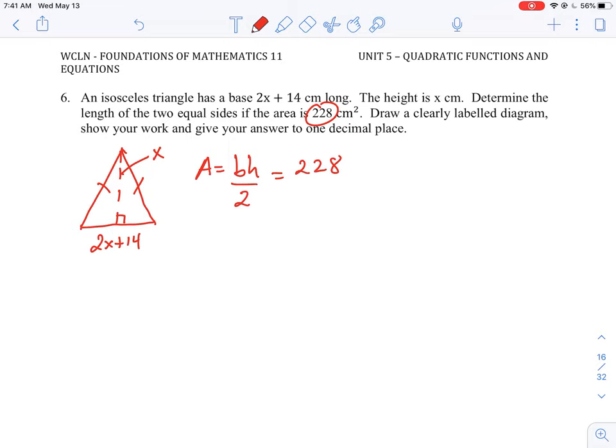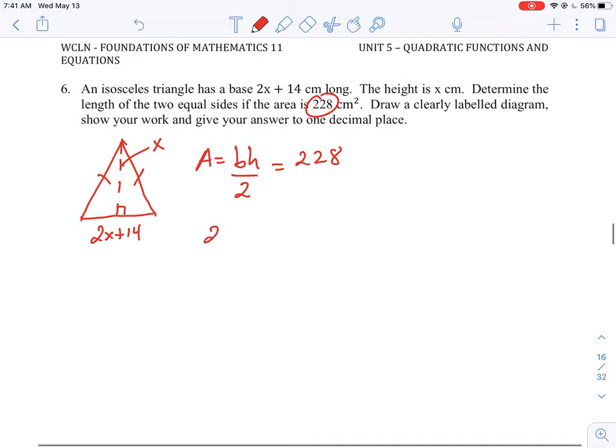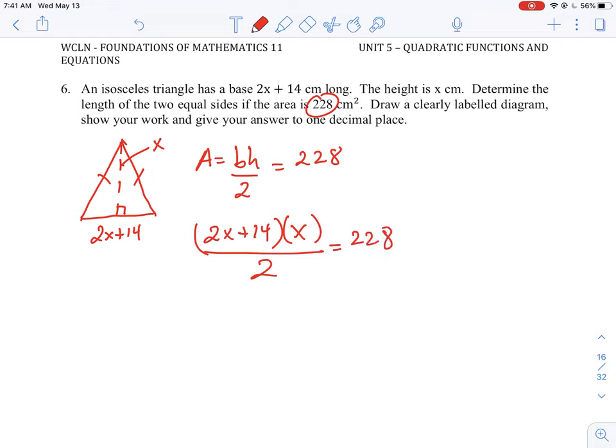So we do know the base of the triangle is 2x plus 14. The height is x. If we divide all that by two and make that equal to 228, that will give us an equation where we can solve for x.